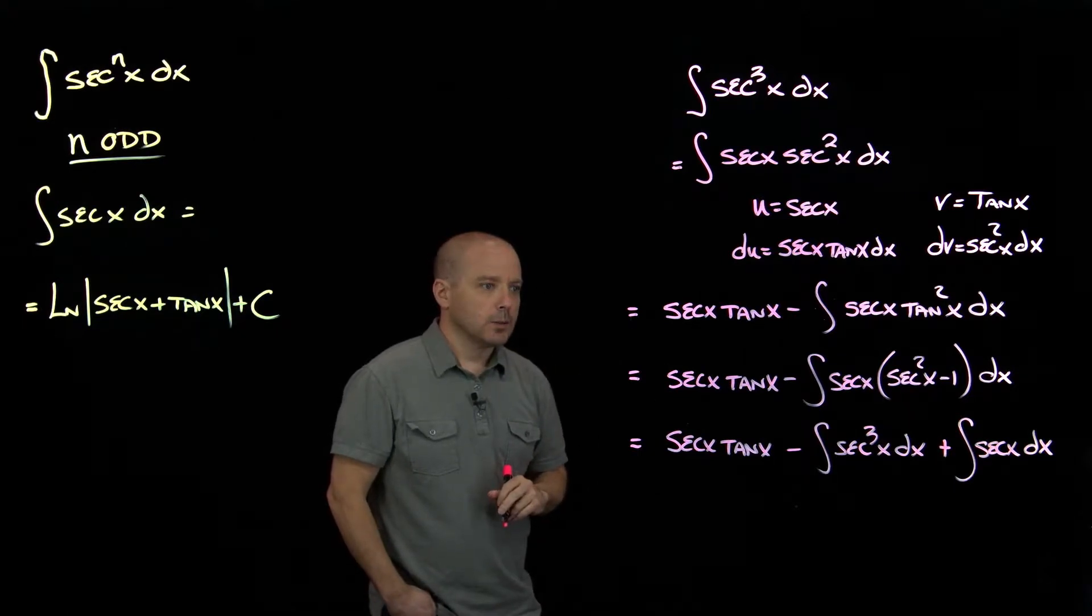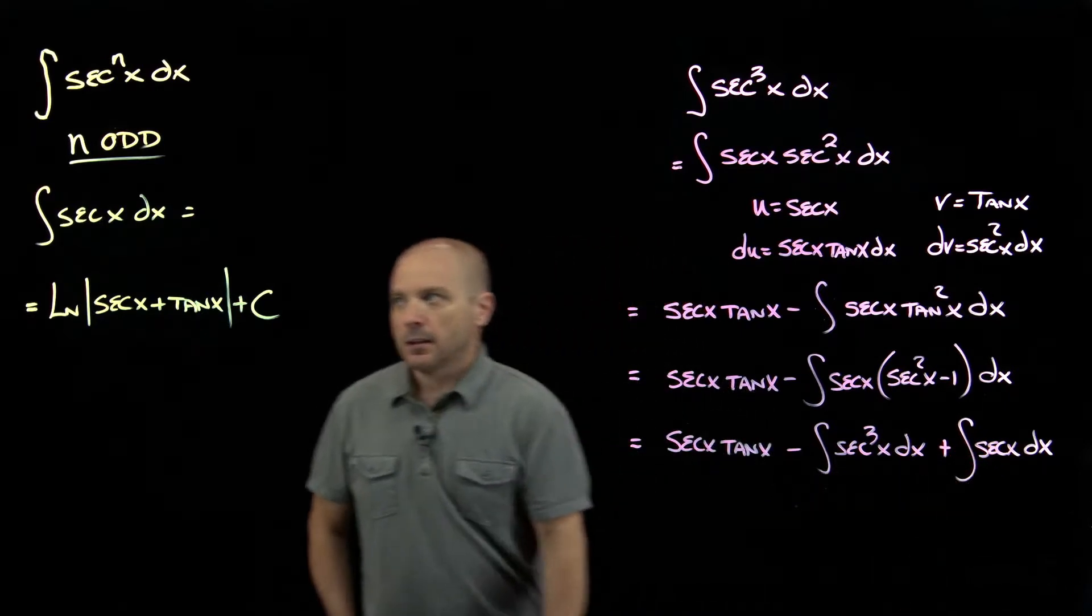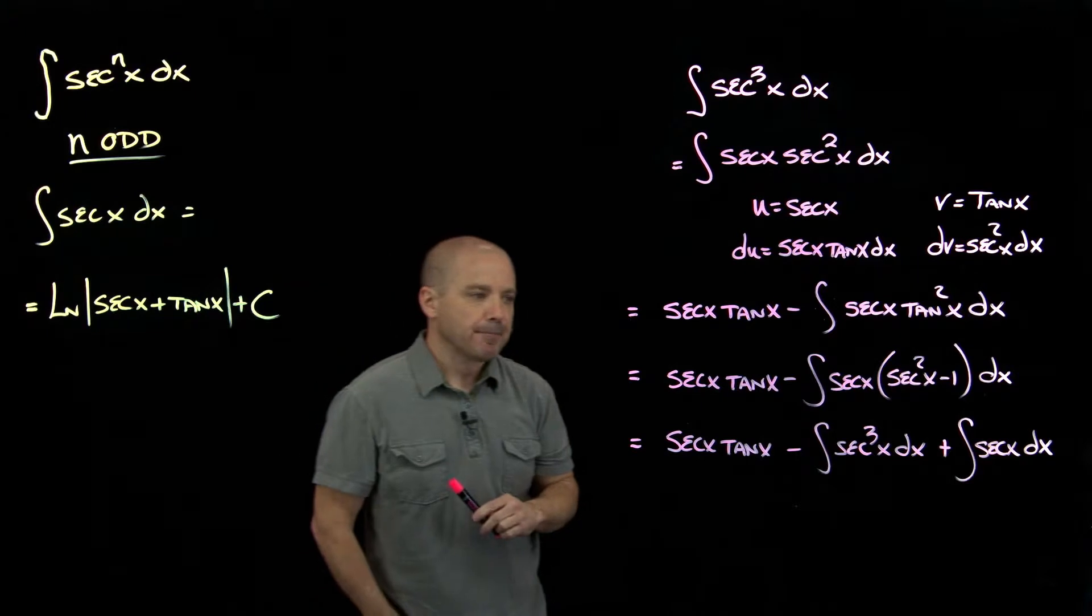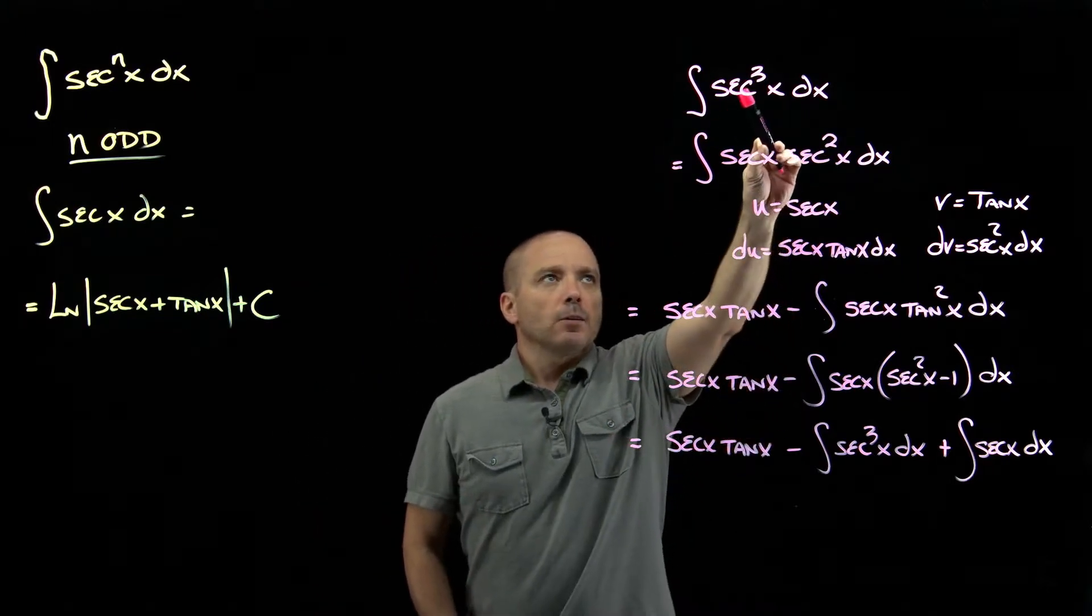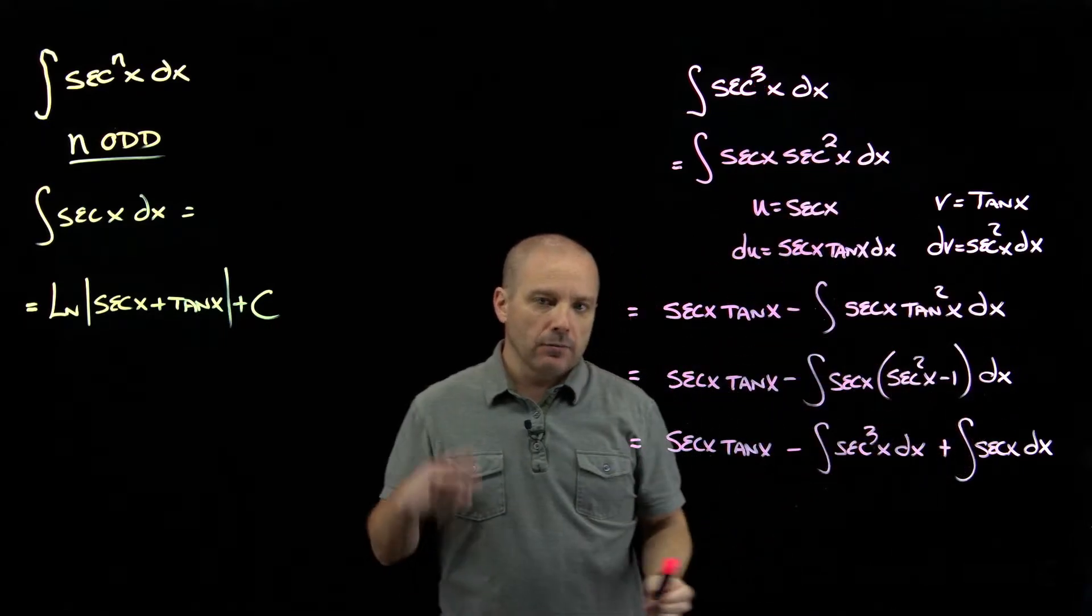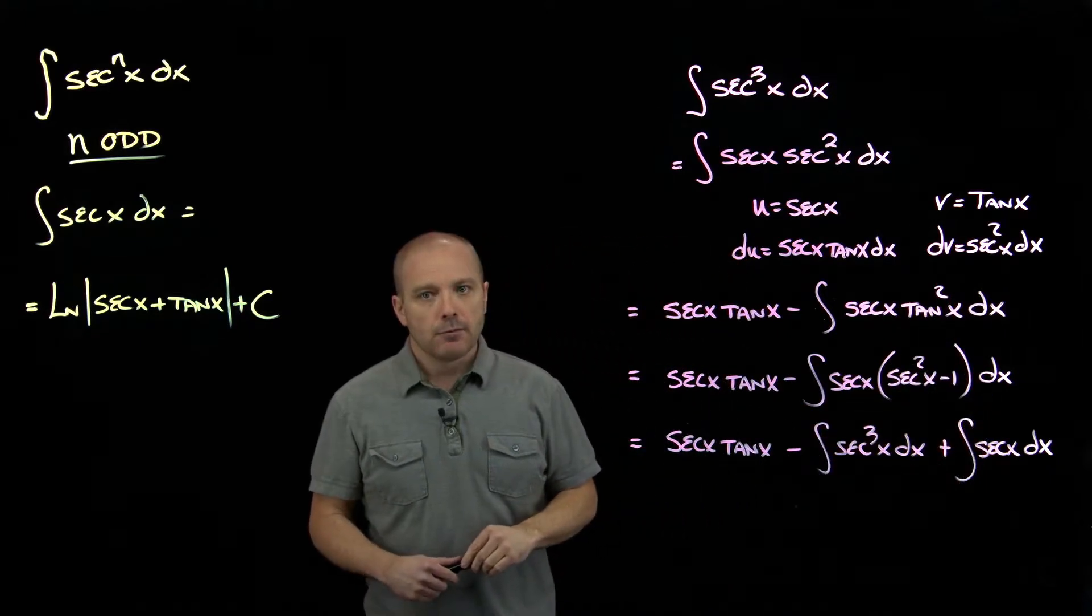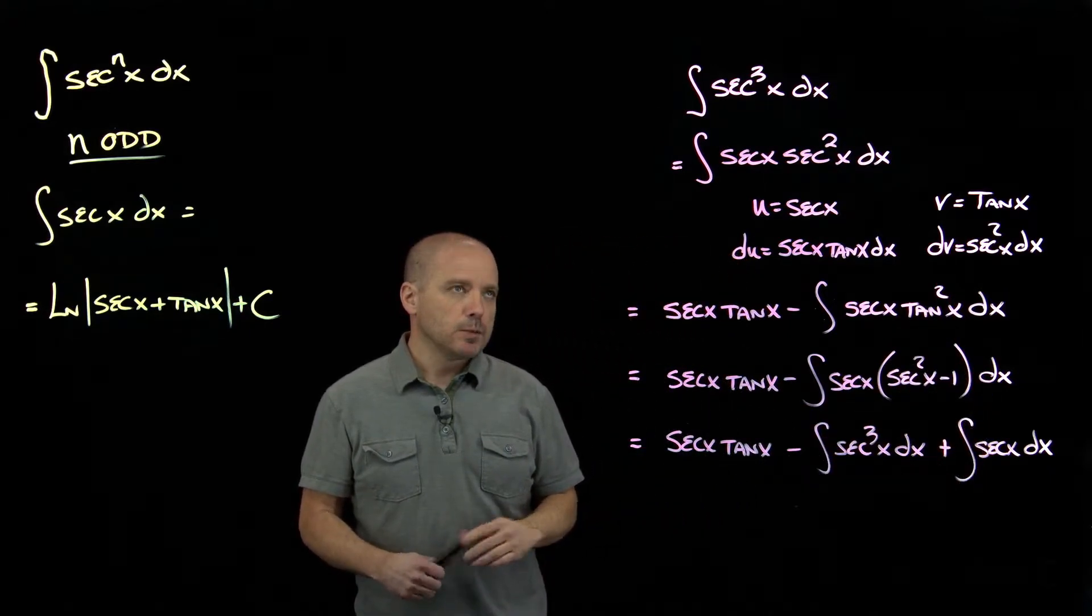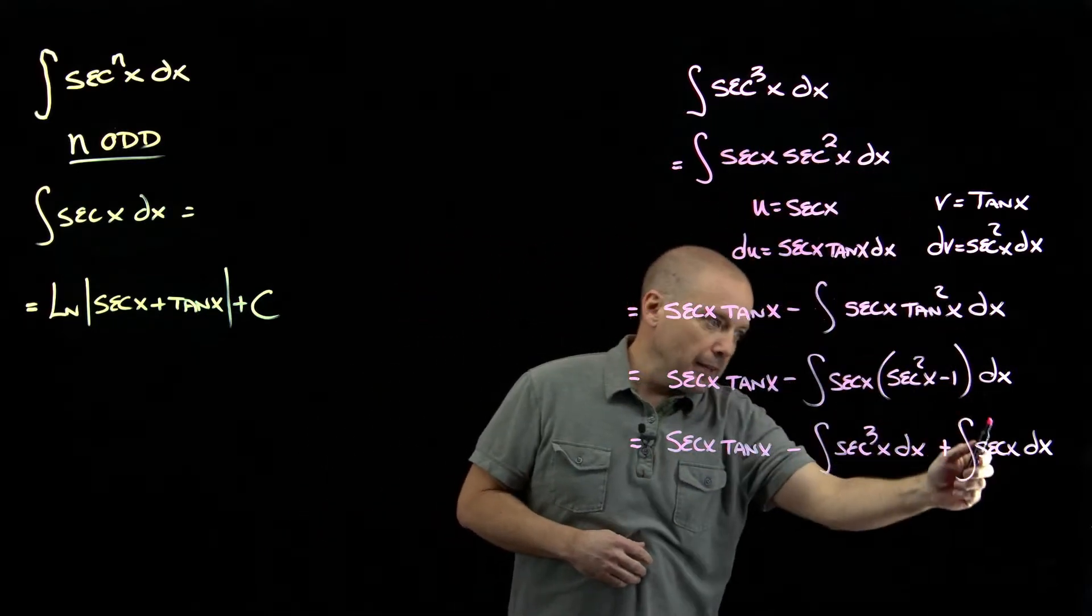Now what do we have? We have an integral of secant which we know how to do, and that's actually the power reduction part of this. So whatever degree you started with, here at this stage you're going to have two degrees less. We had a cubic, it lowered it to a first degree. If we were starting with 13th degree here, this would be 11th.